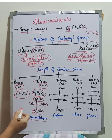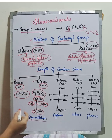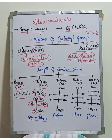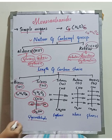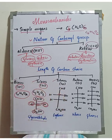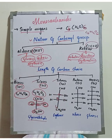In dihydroxyacetone, the ketone group C=O is present on the second carbon, with CH2OH groups on either side. The third category is tetroses, which have 4 carbons. An example is erythrose, with the structure CHO, CHOH, CHOH, CH2OH.